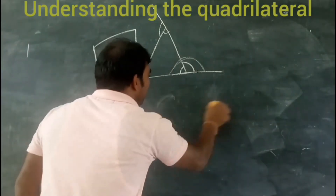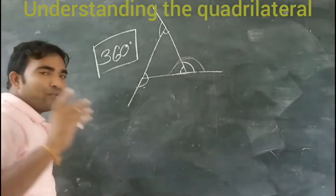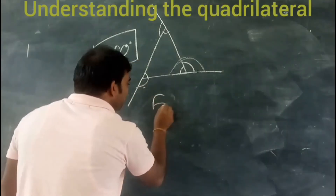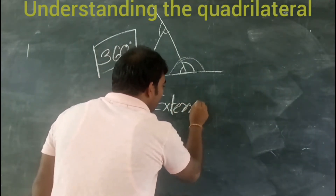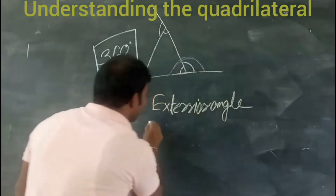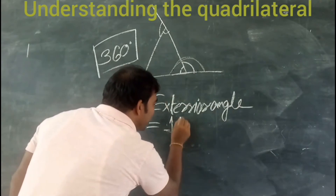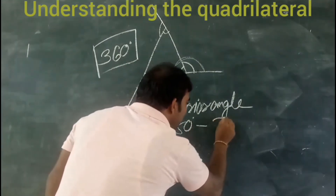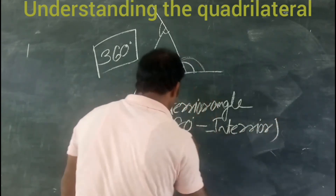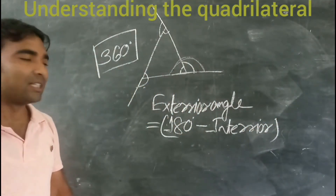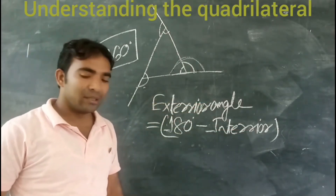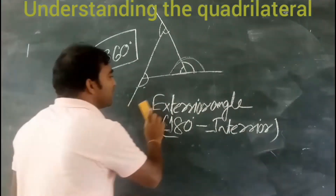So the relation we are getting is: exterior angle = 180 degrees − interior angle, and interior angle = 180 degrees − exterior angle. This is the relation between the interior angle and the exterior angle.